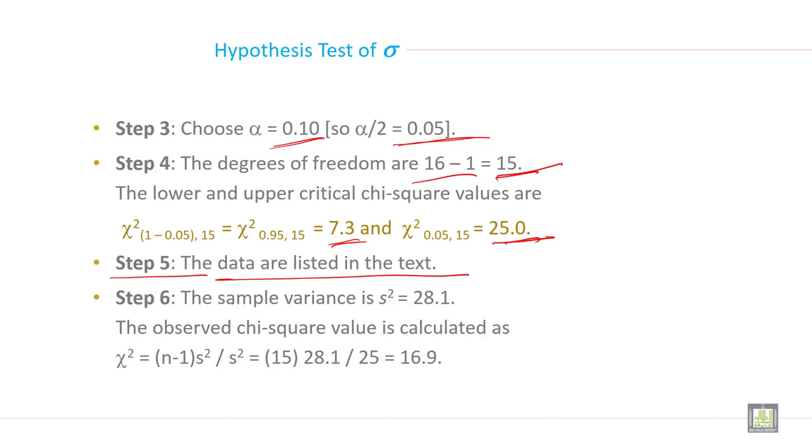So step 6, the sample variance is s² = 28.1. The observed chi-square value is calculated like this and it is 16.9.